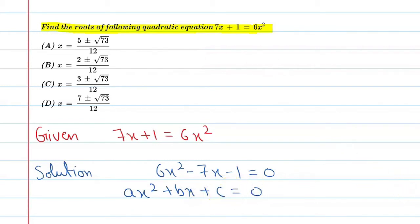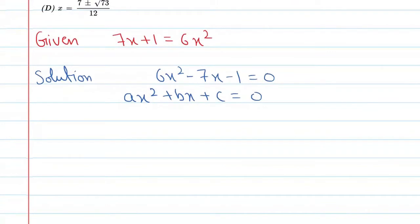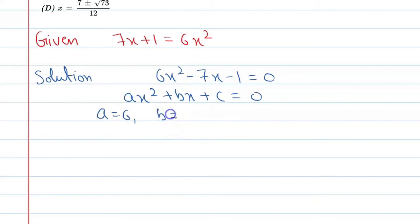From here, you can say a is equal to 6, b is equal to minus 7, and c is equal to minus 1.